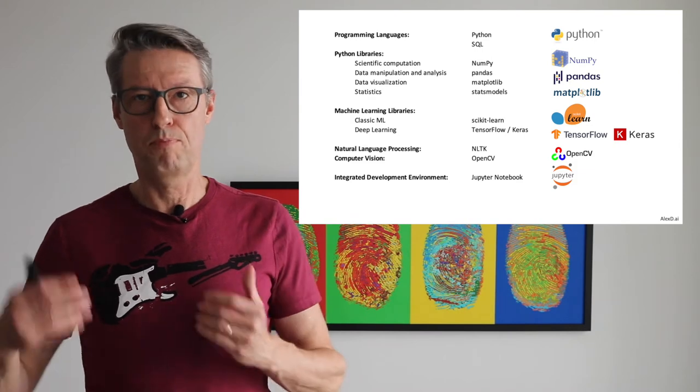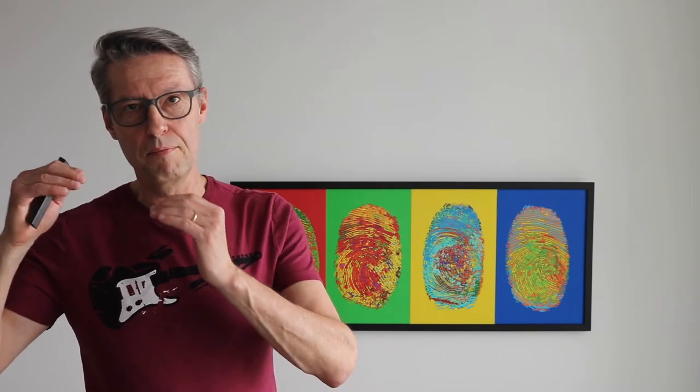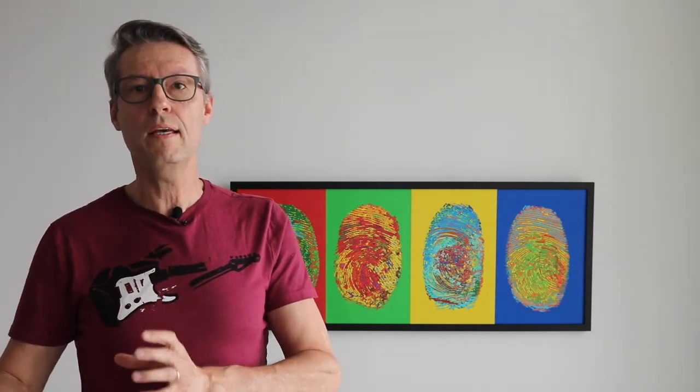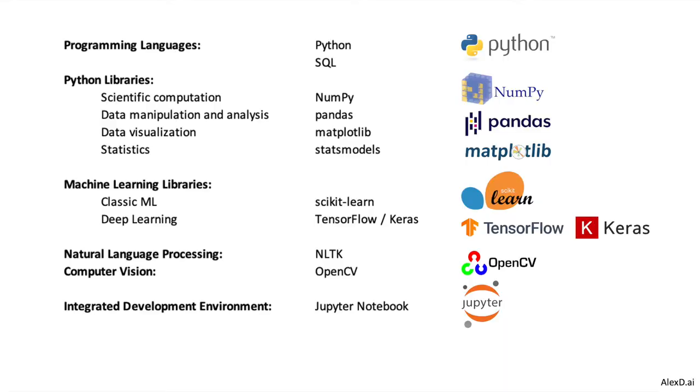During the development phase of a project using AI, you need an environment where you can put your code, see the results, and document what you are doing. Jupyter Notebook is very good for this. It is popular because you can prepare your code, run the code, see the results, and document what you are doing. If you want to collaborate with other people in your project, it is a very powerful and popular tool for working in data science and AI projects.